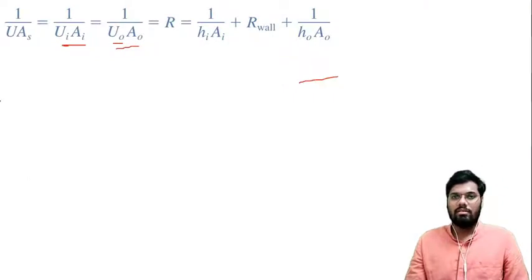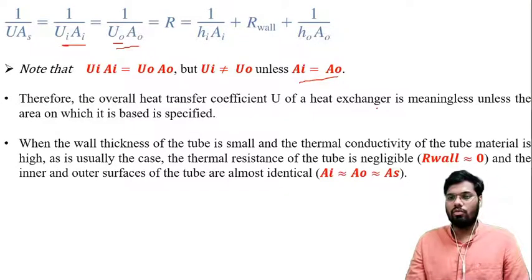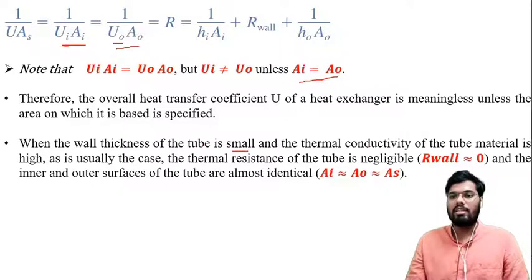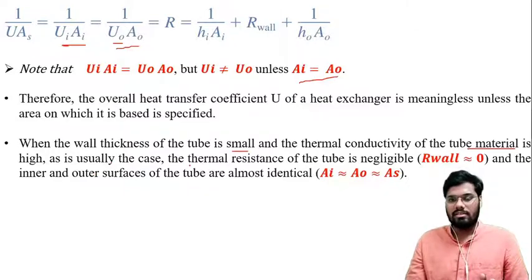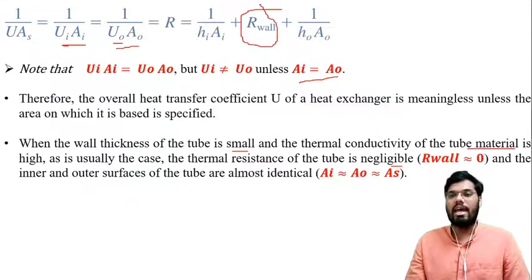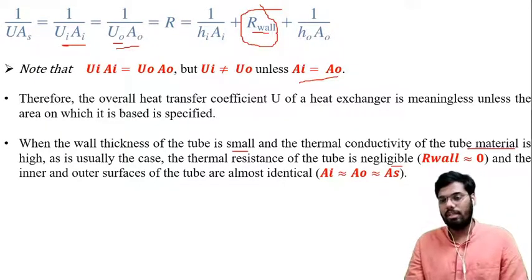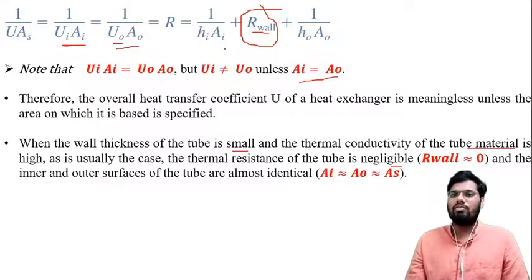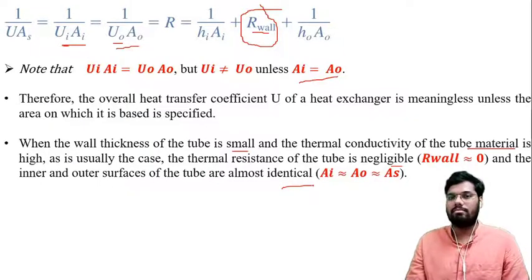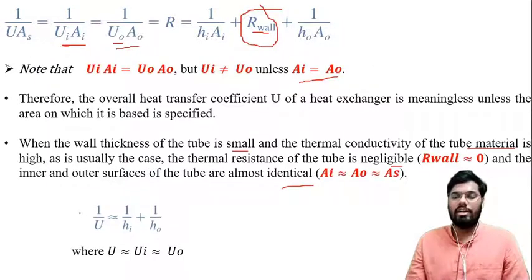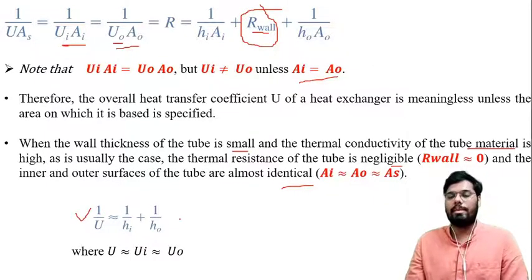Therefore, the overall heat transfer coefficient U for a heat exchanger is meaningless unless the area on which it is based is specified. When the wall thickness of the tube is small and the thermal conductivity of the tube material is very high, the thermal resistance of the tube is negligible — that conductive term goes nearly to zero. At that point we can assume the internal area is nearly equal to the outer area, and the simplified equation becomes: 1/U = 1/Hi + 1/Ho.